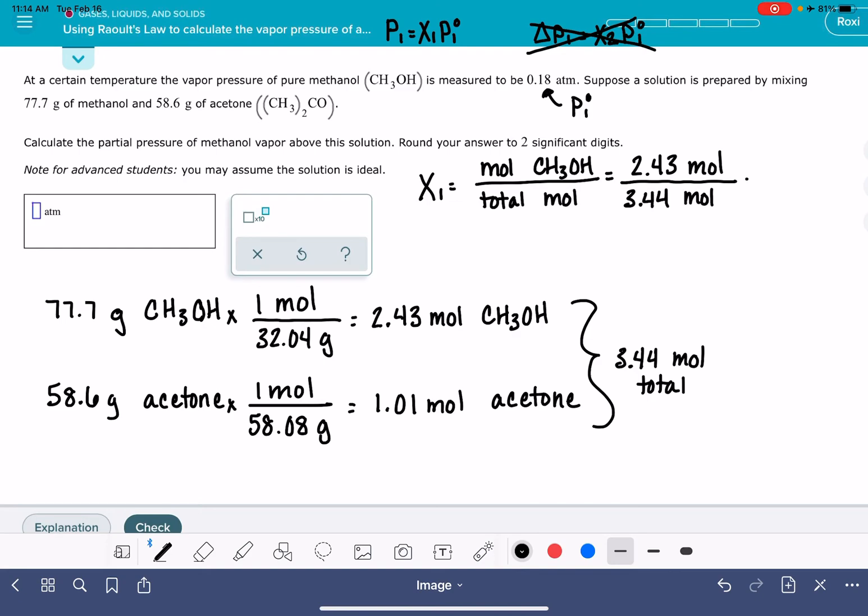Mole fraction is a unitless number. Sometimes students want to convert it into a percent. Don't do that. Just leave it as a decimal, 0.707, unitless number.